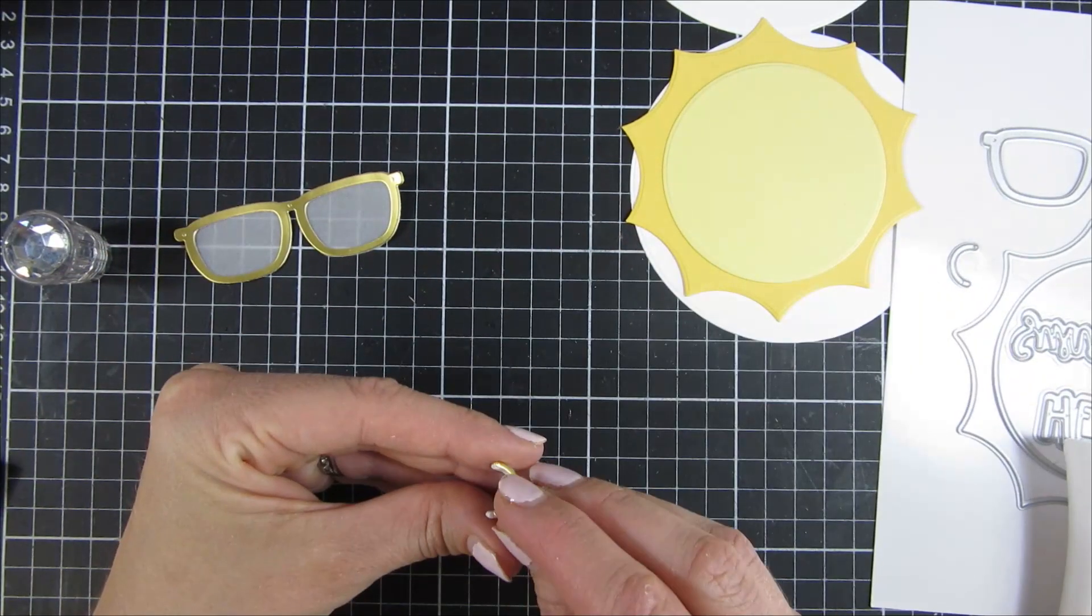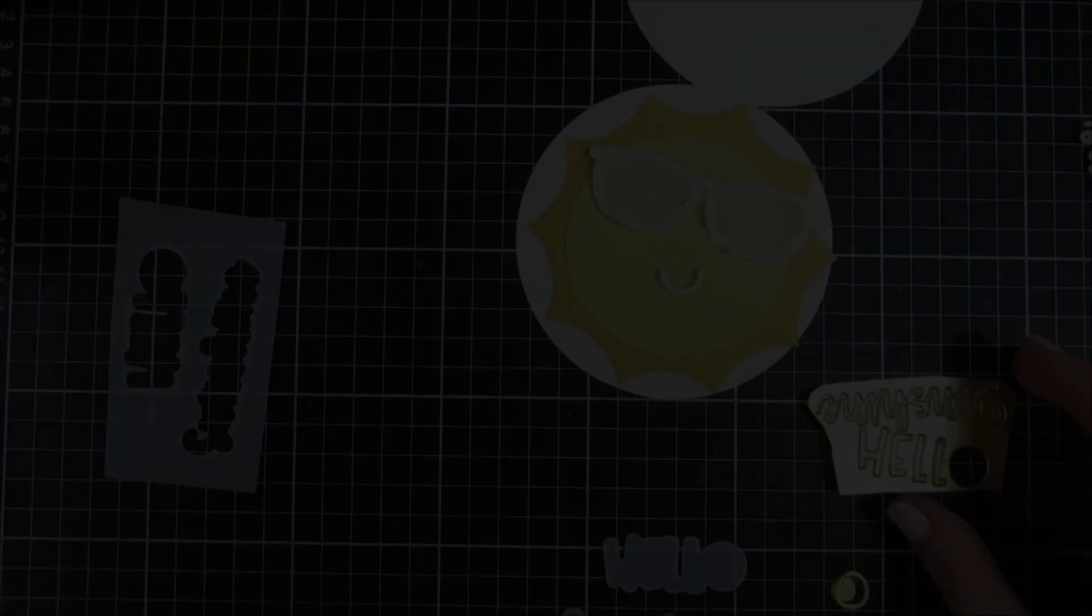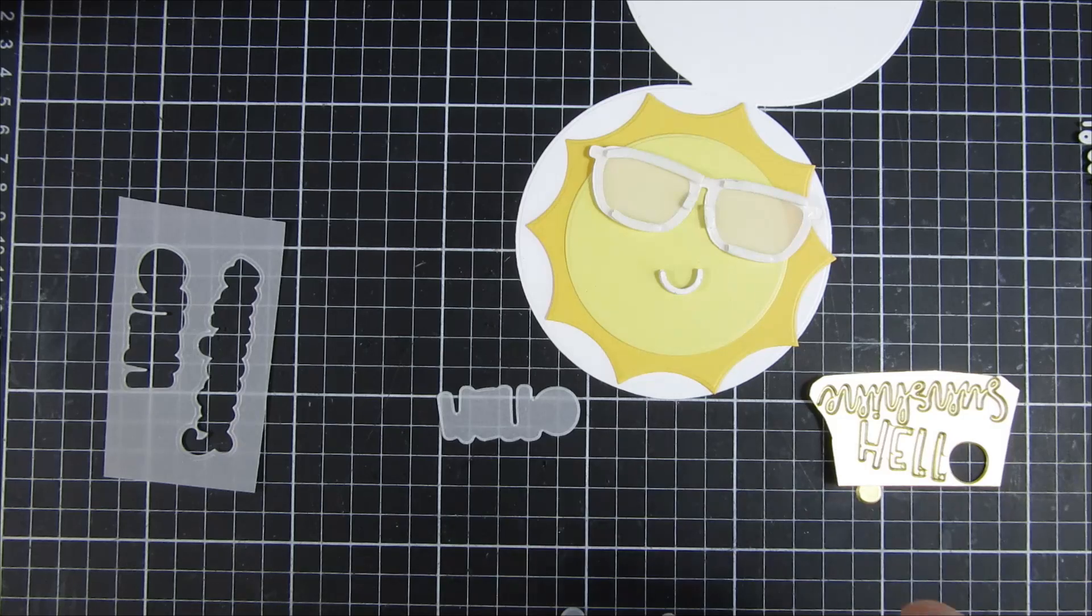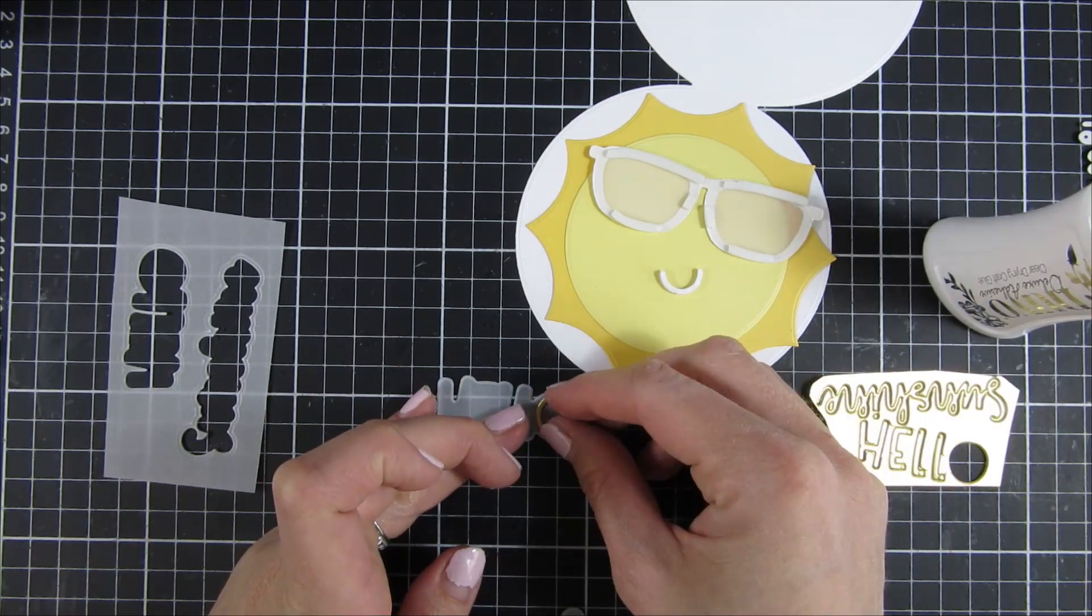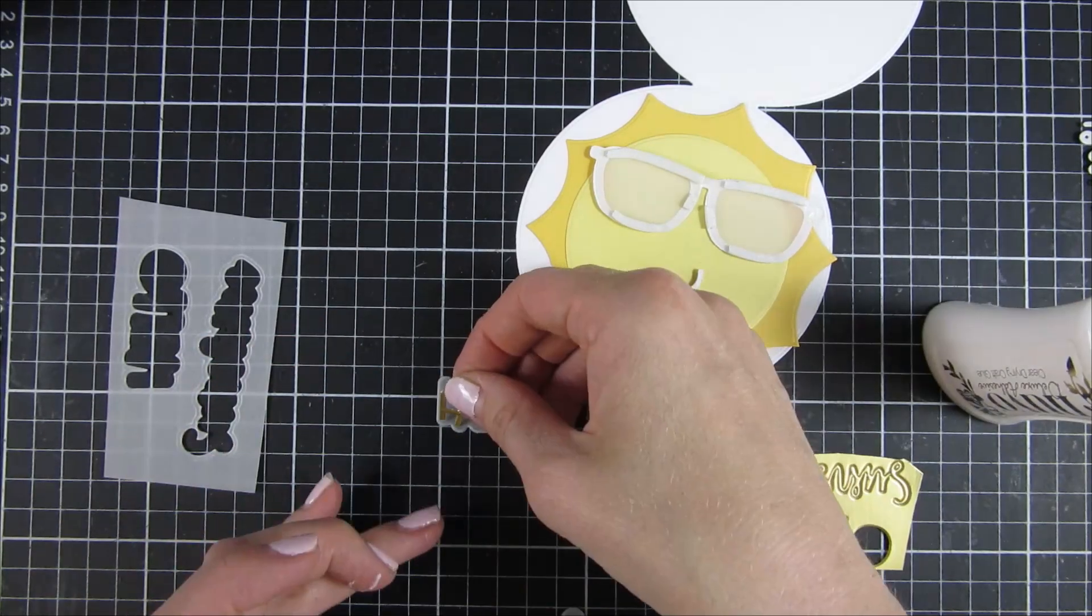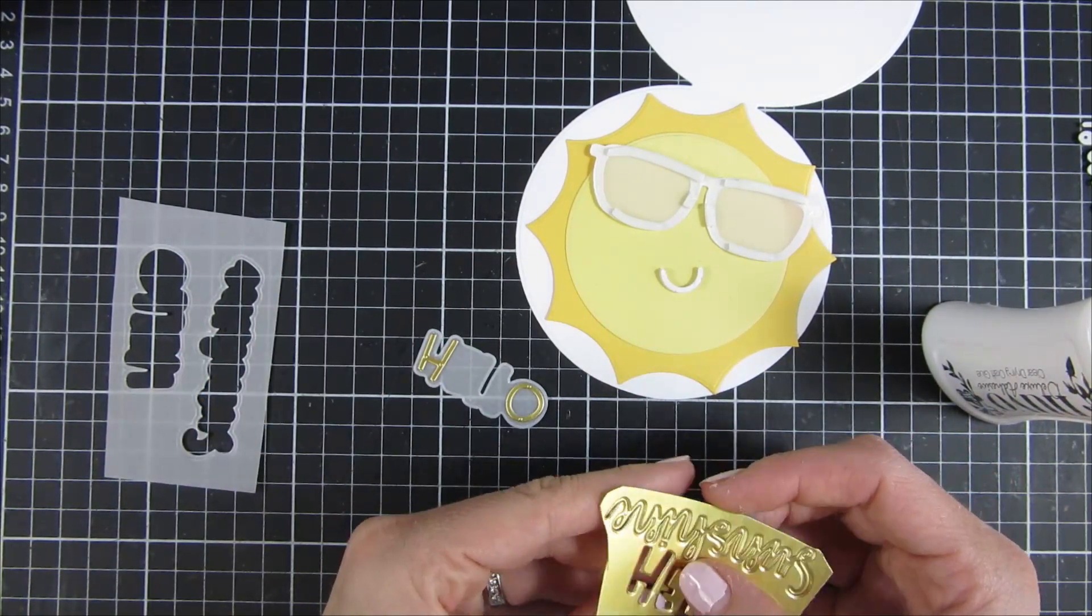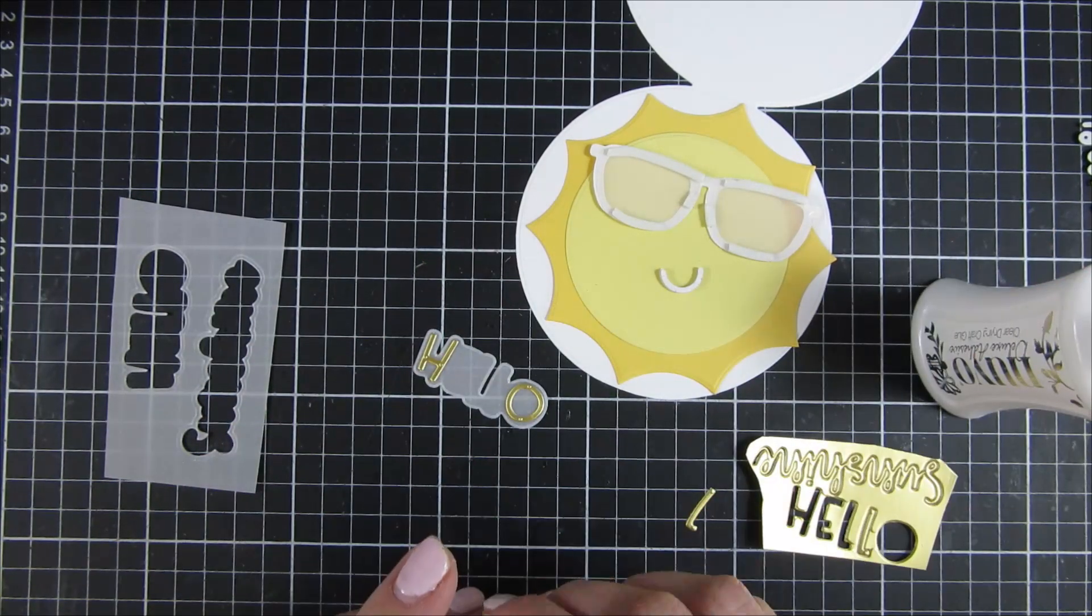I simply cut the pieces that you can see here on screen. I cut them out of some gold matte cardstock and some yellow cardstock in two different shades. In this die set there is the hello sunshine sentiment, so I cut these out as well, along with the sunglasses.